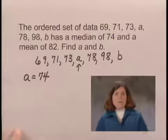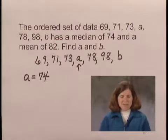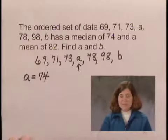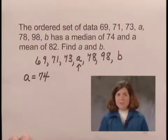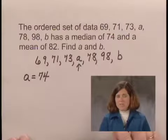For the value of b, we need to know what it means to have a mean of 82. This means the average is 82. In other words, the sum of all these numbers divided by 7 is 82. Now that means that the sum of all these numbers has to be 7 times 82.